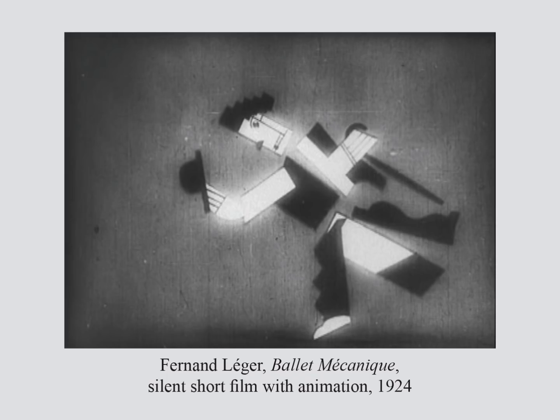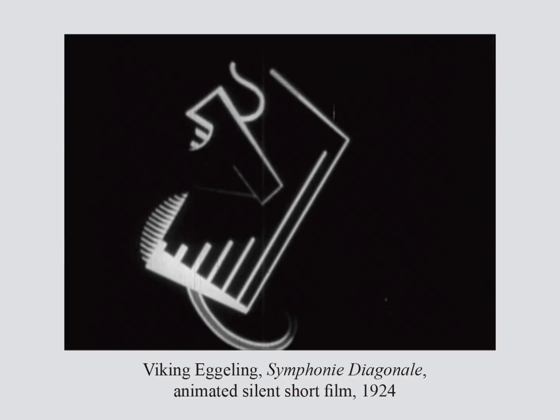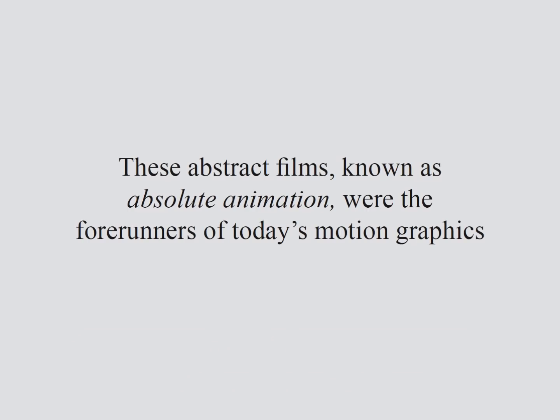Other artists tried their hand at animation, such as the cubist Fernand Léger in his famous short film Ballet Mécanique of 1924. In continental Europe in the 1920s, we saw the development of an abstract form of animation sometimes known as visual music. An early example is Symphony Diagonal by Viking Eggeling, a Swedish artist associated with the Dada movement. These abstract films were also known as absolute animation, and they were the forerunners of what we call motion graphics today.